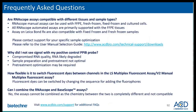Are RNAscope assays compatible with different tissues and sample types? Yes — RNAscope assays can be used with FFPE, fresh frozen, fixed frozen, and even cultured cells. They were all primarily optimized for FFPE tissue, but now with the Leica Bond RX, they are compatible with fixed frozen and fresh frozen samples as well. Why did I not see signal with my positive control PPIB? There may be several reasons, including compromised RNA quality — if the RNA is degraded, it will be hard to see the signal — or if sample preparation and pretreatment is not optimized for the sample.